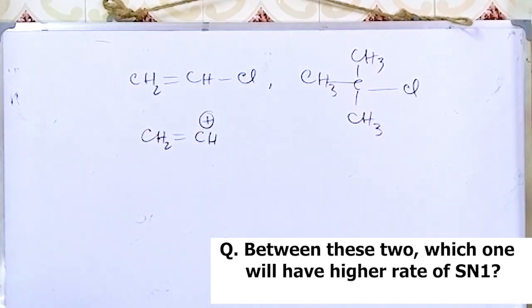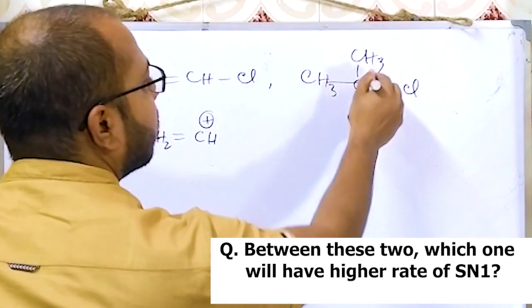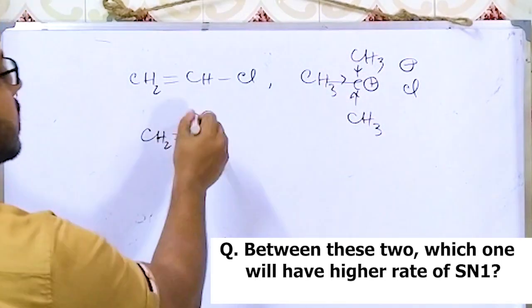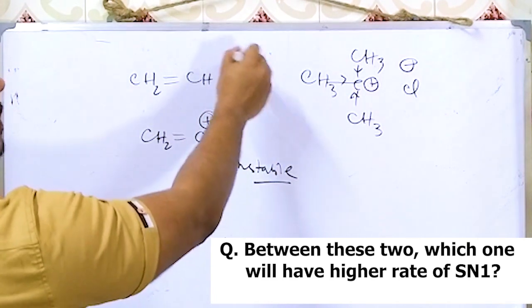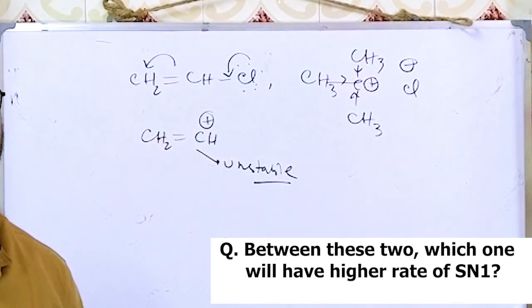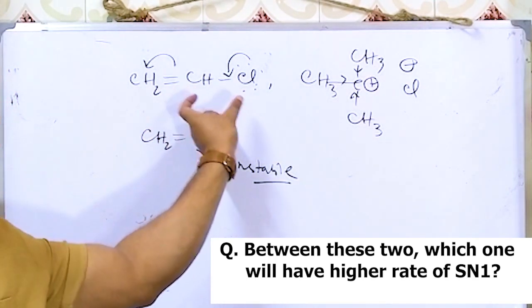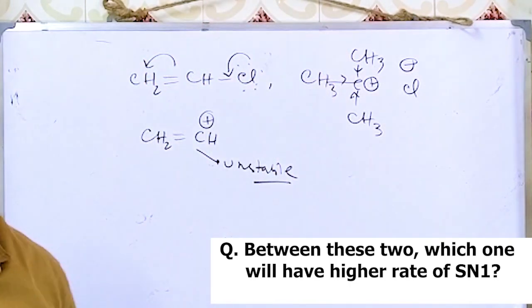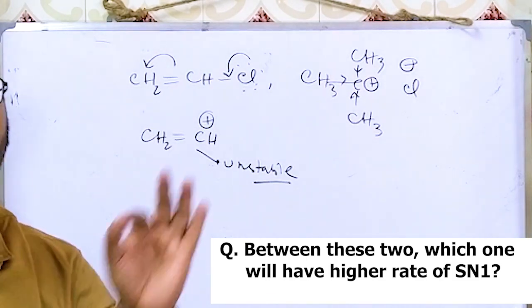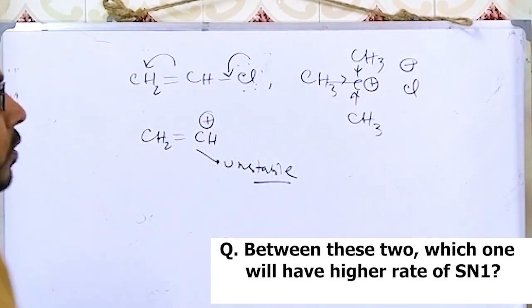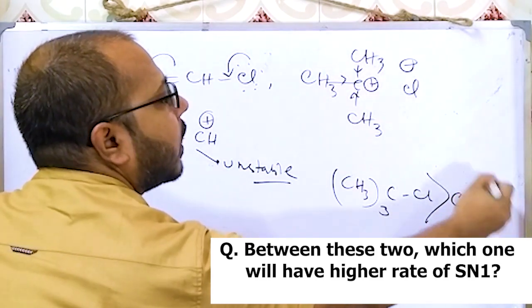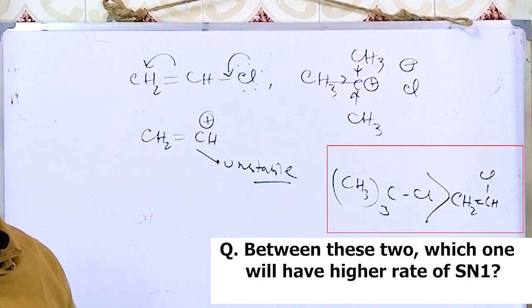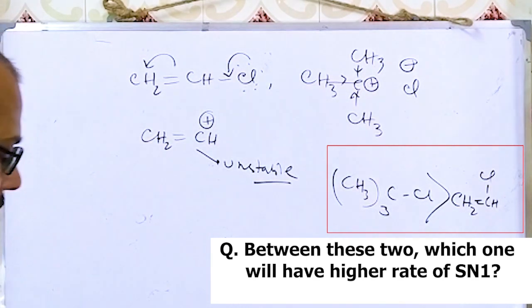In phenyl chloride, the carbocation formed is very unstable, and resonance also makes substitution of the Cl atom difficult. Therefore, tertiary butyl chloride will have a higher rate of SN1 than phenyl chloride, because its 3-degree carbocation is stable and there is no competing resonance locking the C-Cl bond.